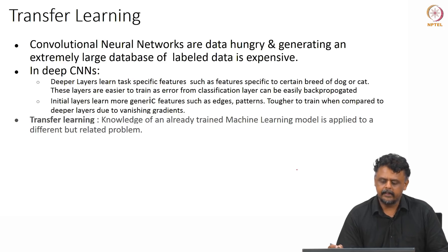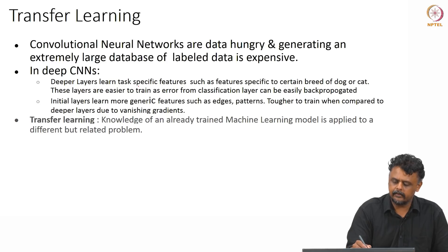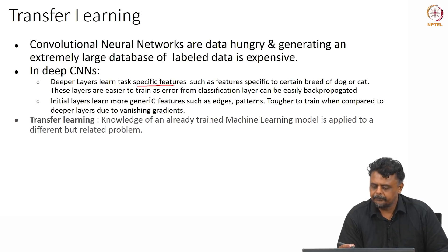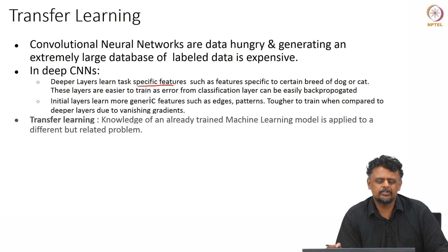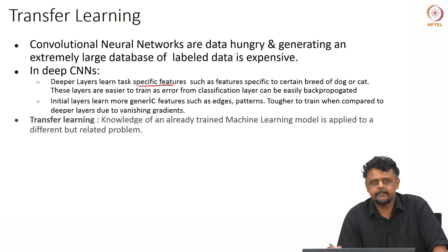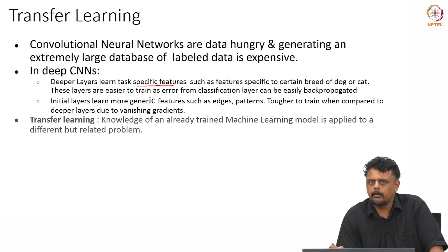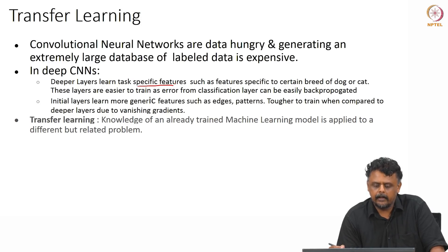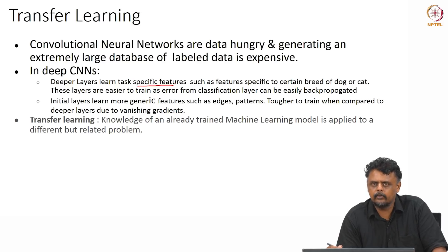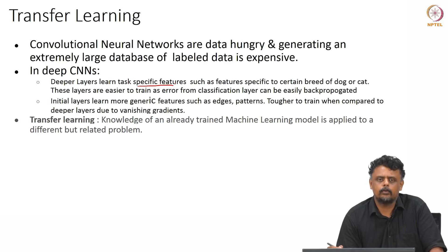For a CNN trained on ImageNet, the deeper layers learn task-specific features — for instance, features specific to a certain breed of dog or cat. These are easier to train as they are closer to the classification layer, so errors backpropagate faster. The initial layers learn more generic low-level features like edges, blobs, and patterns in the picture, and are generally difficult to train because errors are difficult to backpropagate from the output layer to the innermost layers.